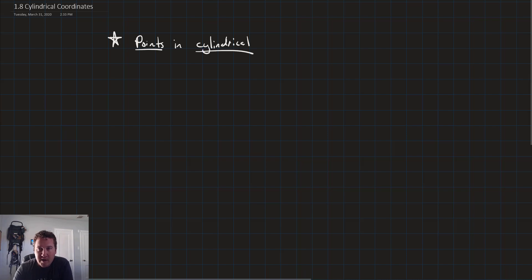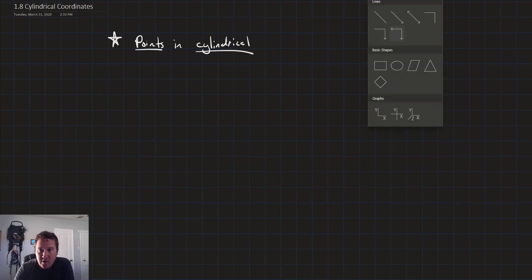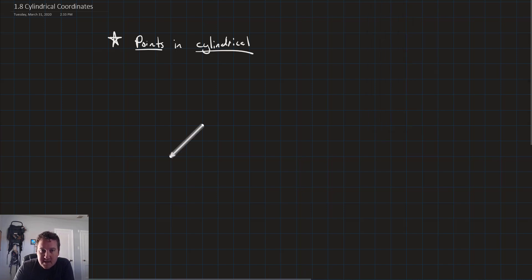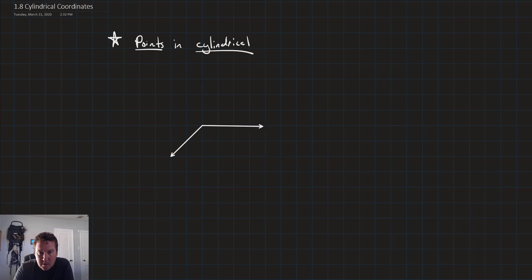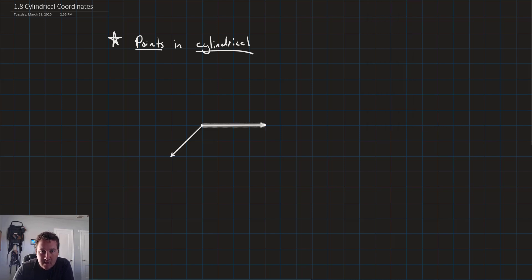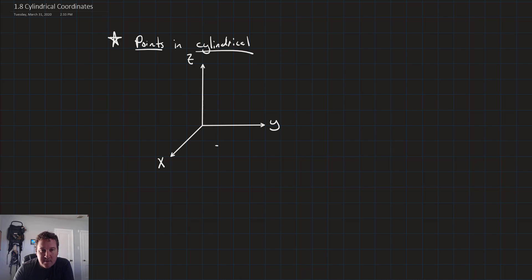Let's start by bringing back our rectangular coordinate system. We've got our x-axis, y-axis, and our z-axis — label those X, Y, and Z. And if we have a point P...